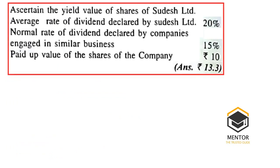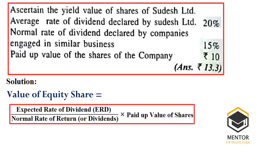Ascertain the yield value of share: average rate of dividend declared by the company is 20%; normal rate of dividend declared by companies engaged in similar business (NRD) is 15%; paid-up value of share is Rs. 10. As the question provides only information on dividends, we directly apply the formula based on rate of dividend: value of share = ERD ÷ NRD × paid-up value = 20 ÷ 15 × 10 = Rs. 13.33. The formula to apply is based on the information given in the question.